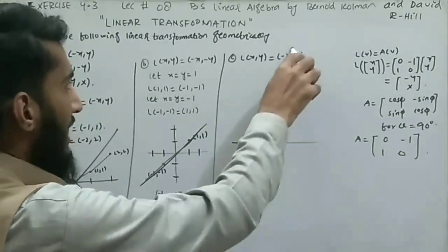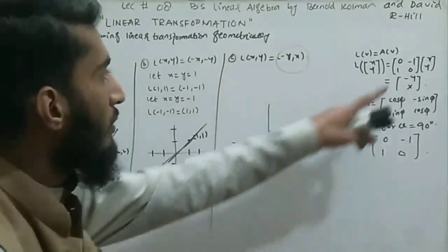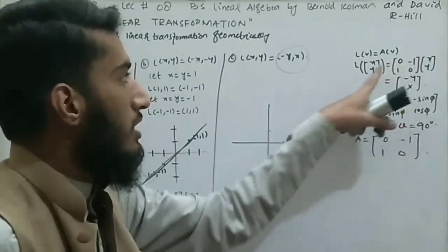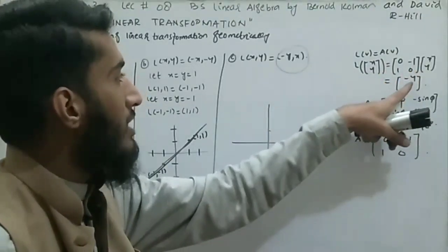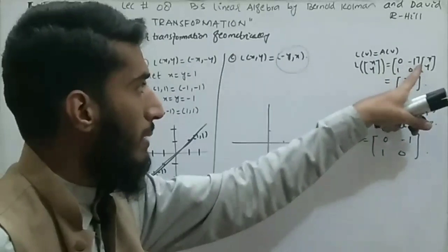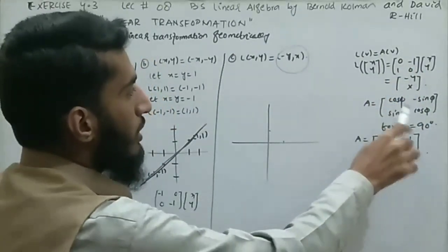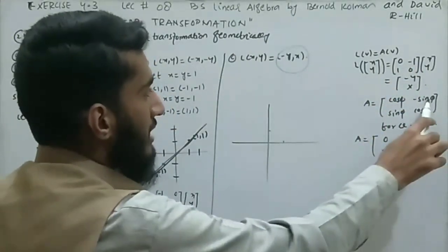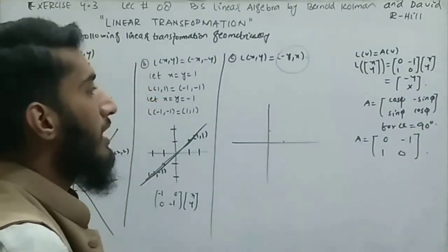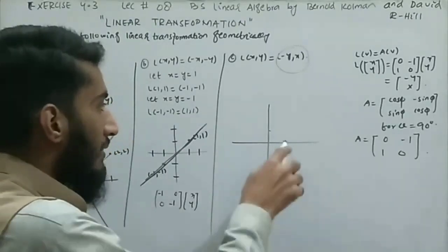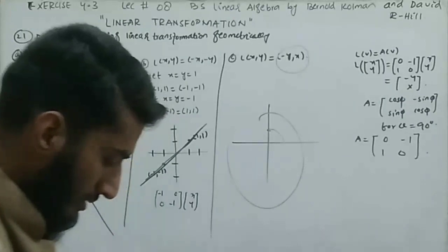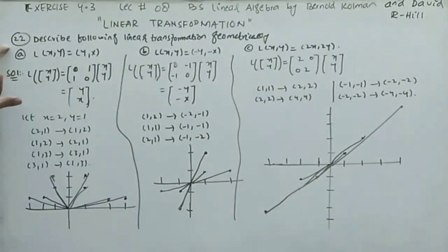Part (c): L(x,y) = (-y, x). This transformation corresponds to matrix A = [0,-1; 1,0]. This matrix equals the rotation matrix [cos θ, -sin θ; sin θ, cos θ] when θ = 90°, since cos 90° = 0 and sin 90° = 1. Therefore this transformation is a counterclockwise rotation through 90 degrees.